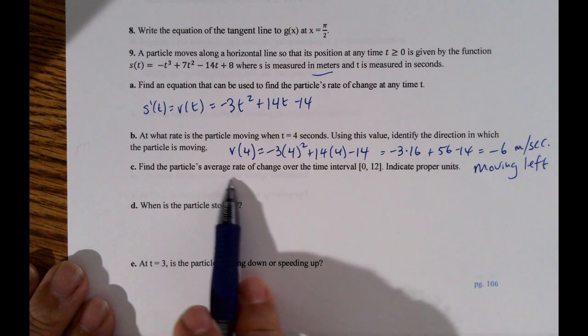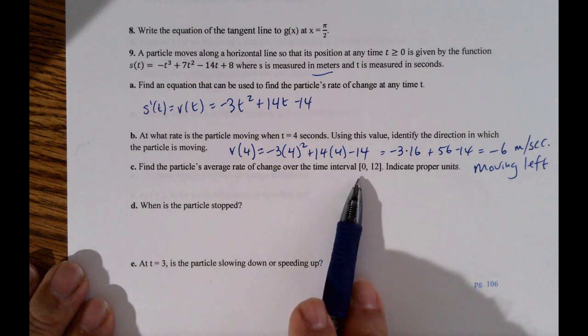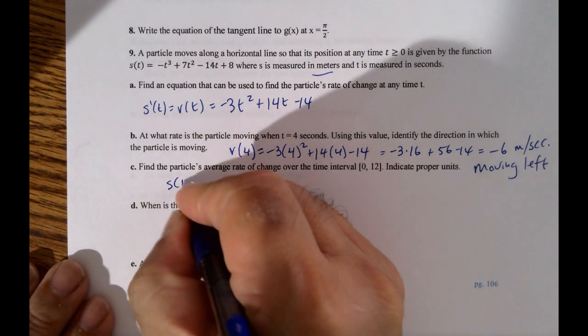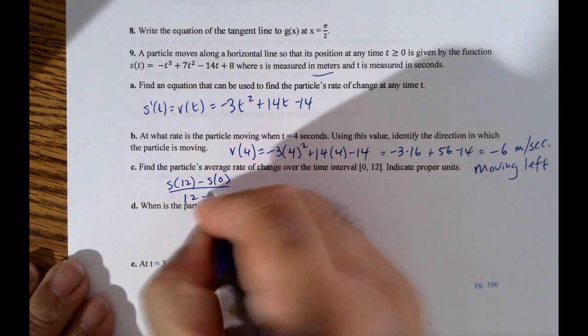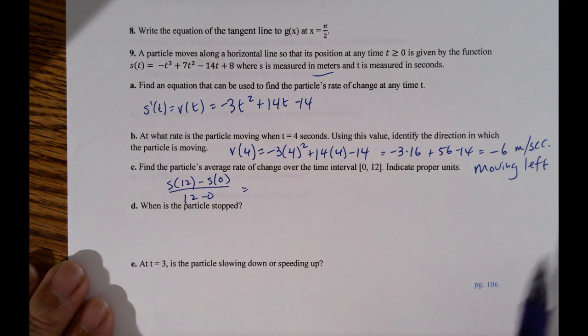Find the particle's average rate of change over the time interval. So average rate of change, you're going to look at s sub the end point minus s sub 0 over 12 minus 0. So s sub 12 means I've got to plug 12 into that. And I'm going to pause the video while I get a calculator.